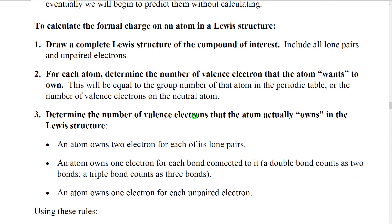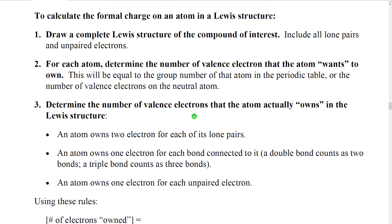So how do we calculate a formal charge? The first thing we're going to do is we're going to have to have a complete Lewis structure. The Lewis structure is going to have to have all of the lone pairs, all of the multiple bonds, all of the unpaired electrons. It has to be totally complete.